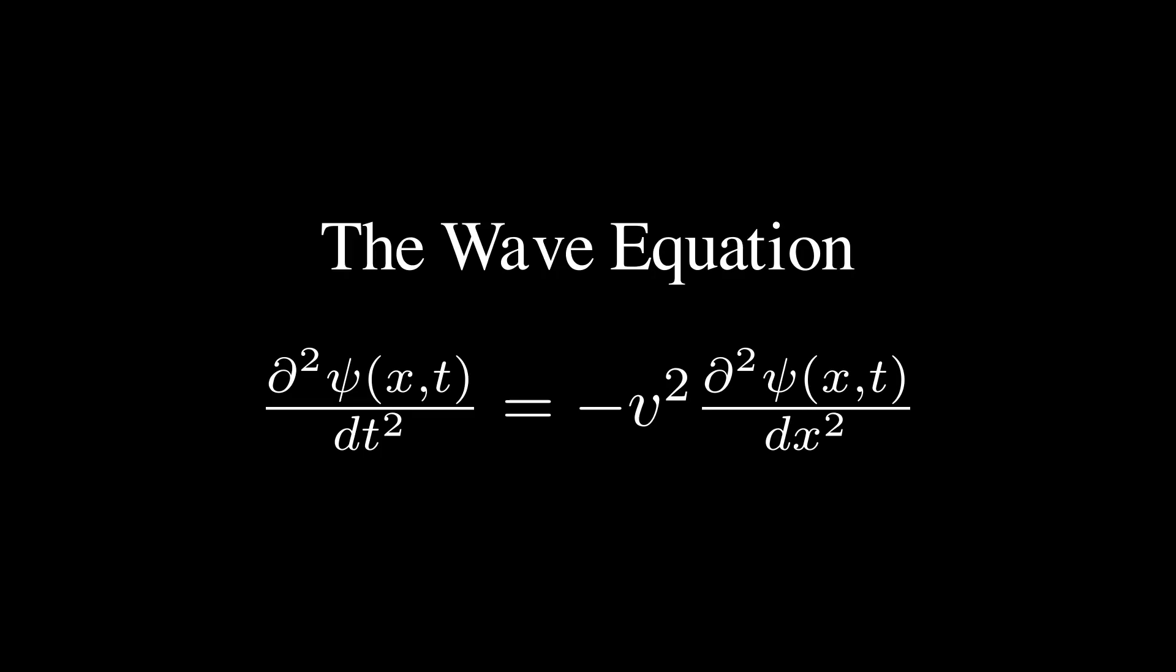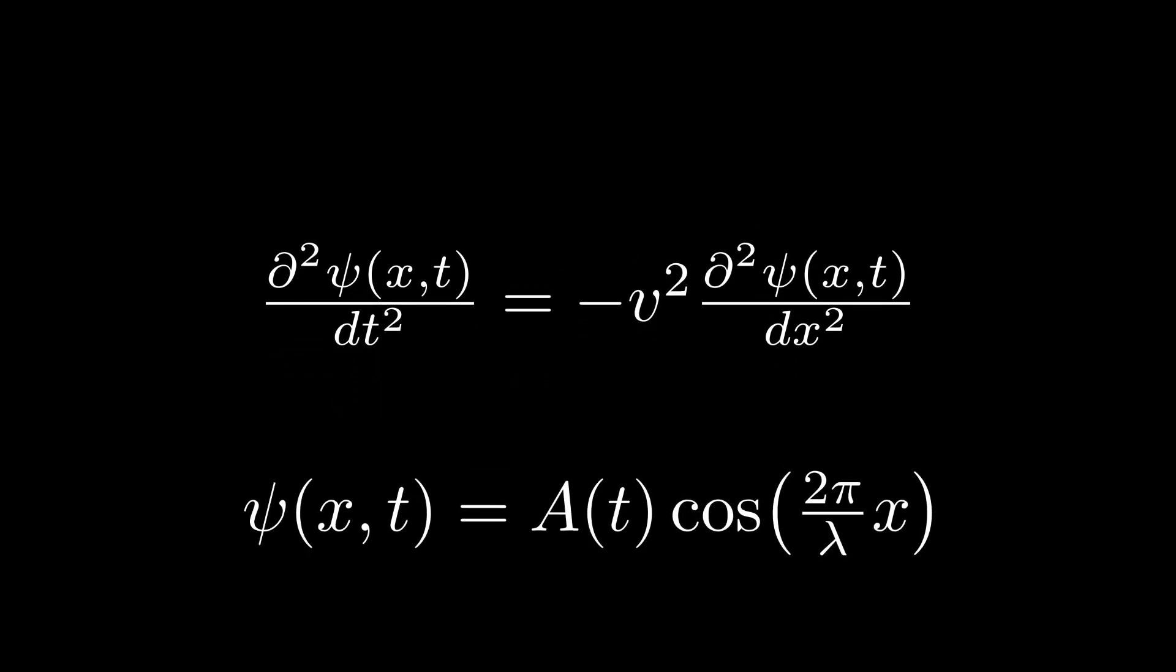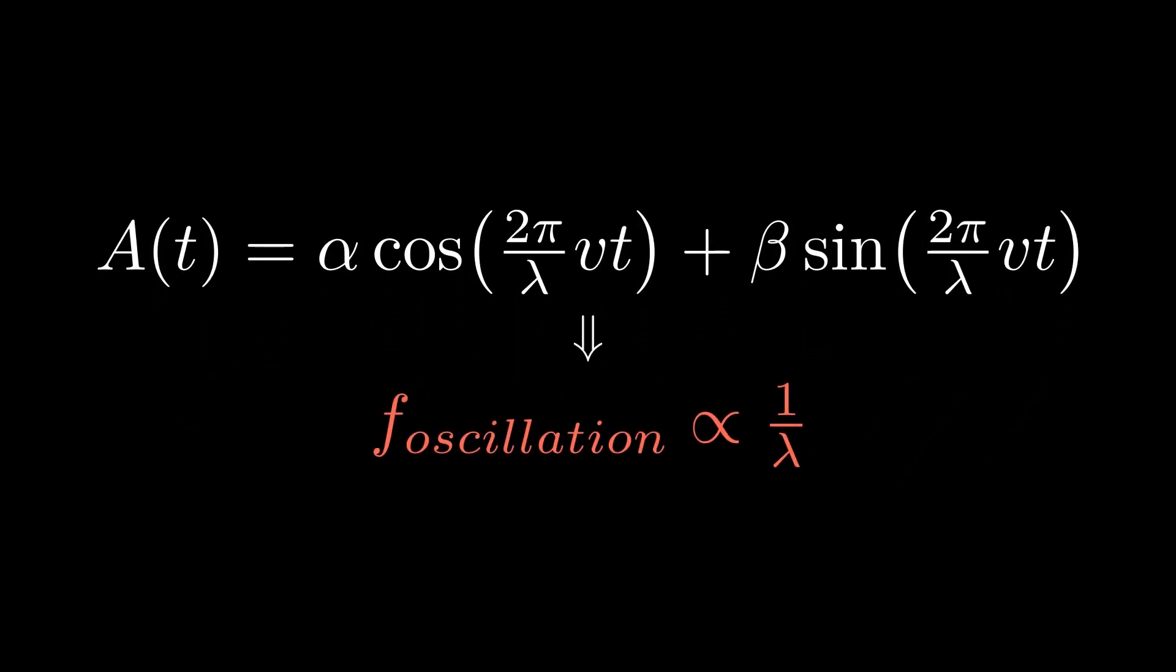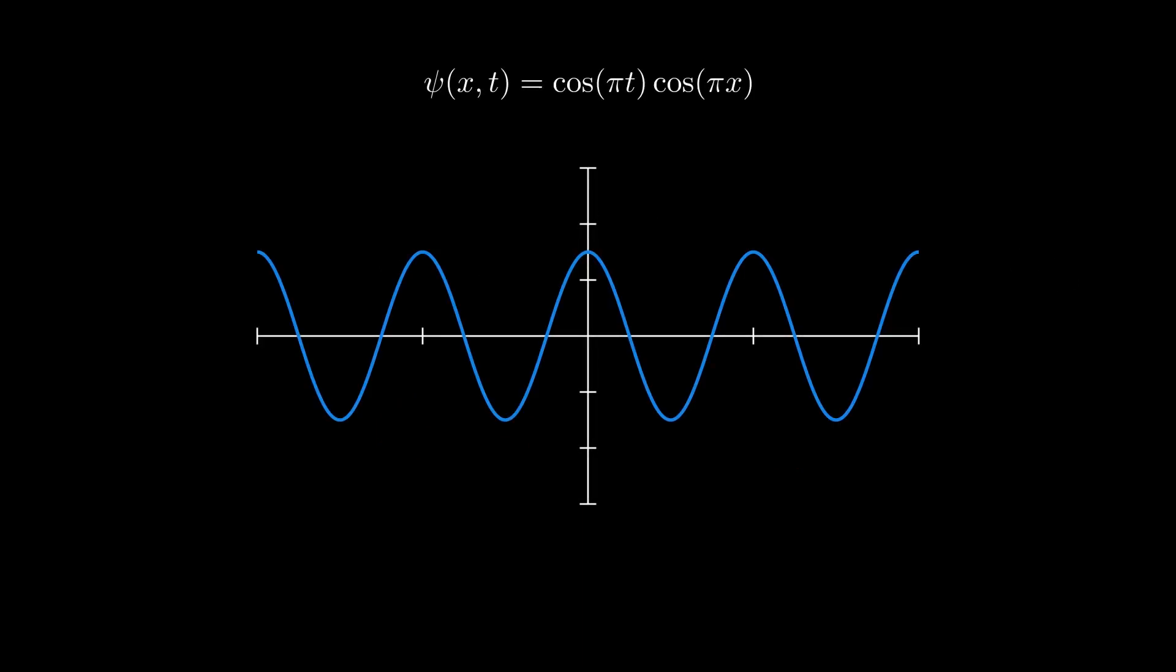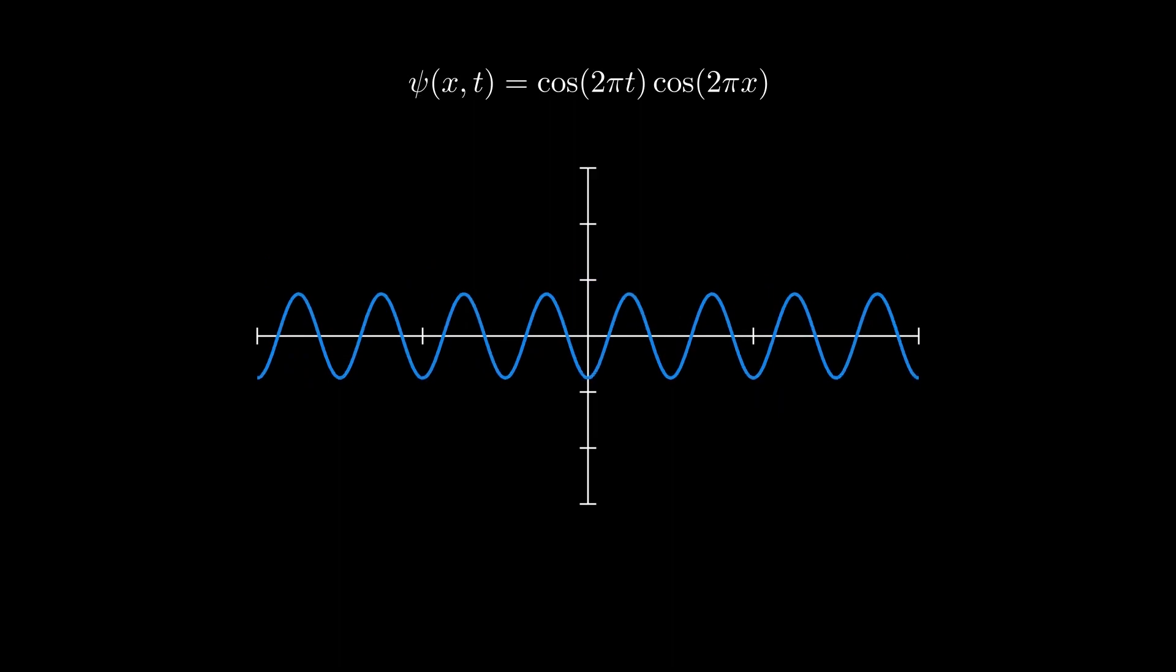Starting with the assumption that all of the waves generated in the early universe began from rest, we can begin to understand where these features come from. Basic wave mechanics tells us that waves of different wavelengths will all evolve independently, with an oscillation frequency inversely proportional to their wavelength. Thus waves with longer spatial wavelengths oscillate more slowly in time, while waves with shorter spatial wavelengths oscillate more quickly in time.